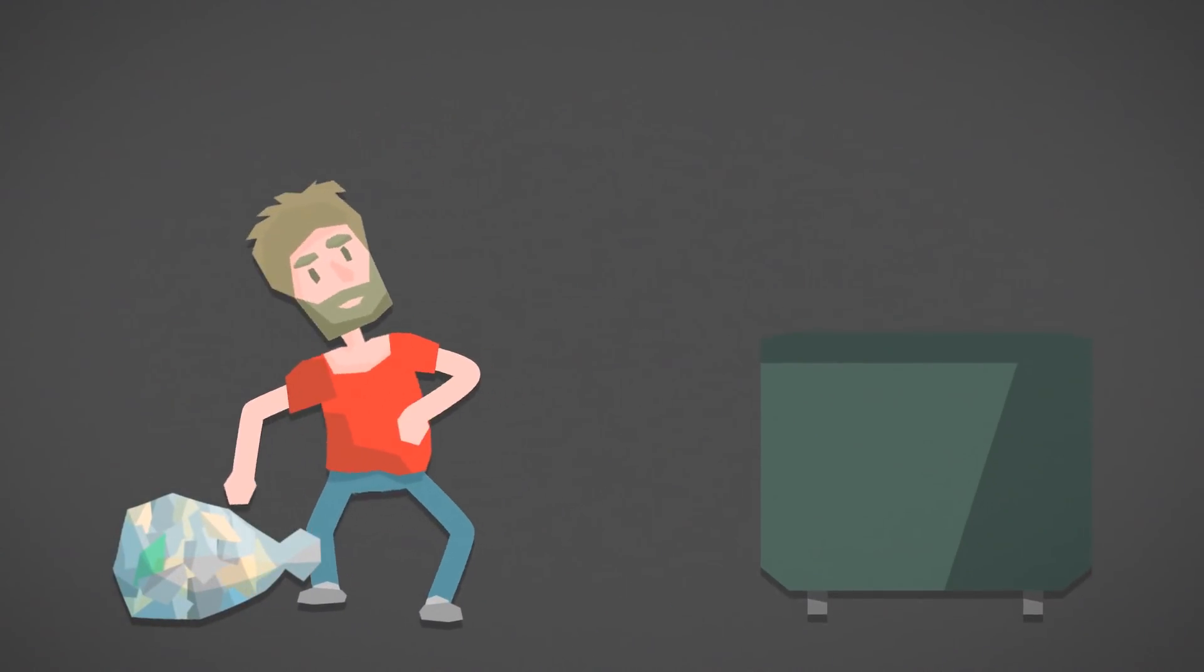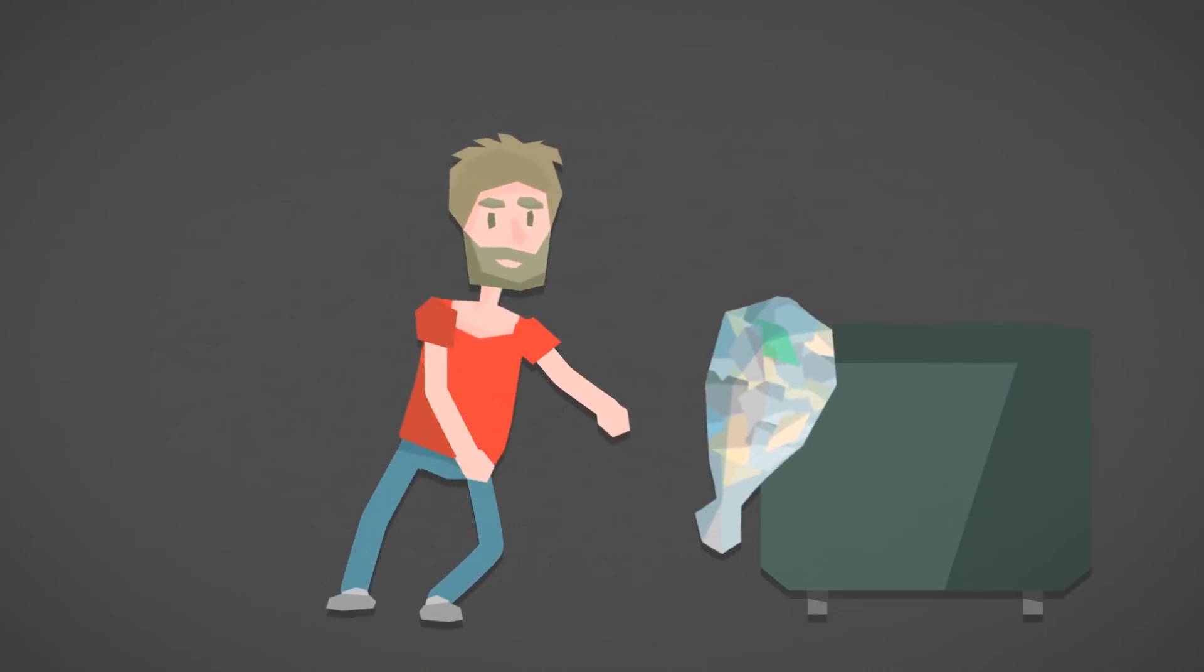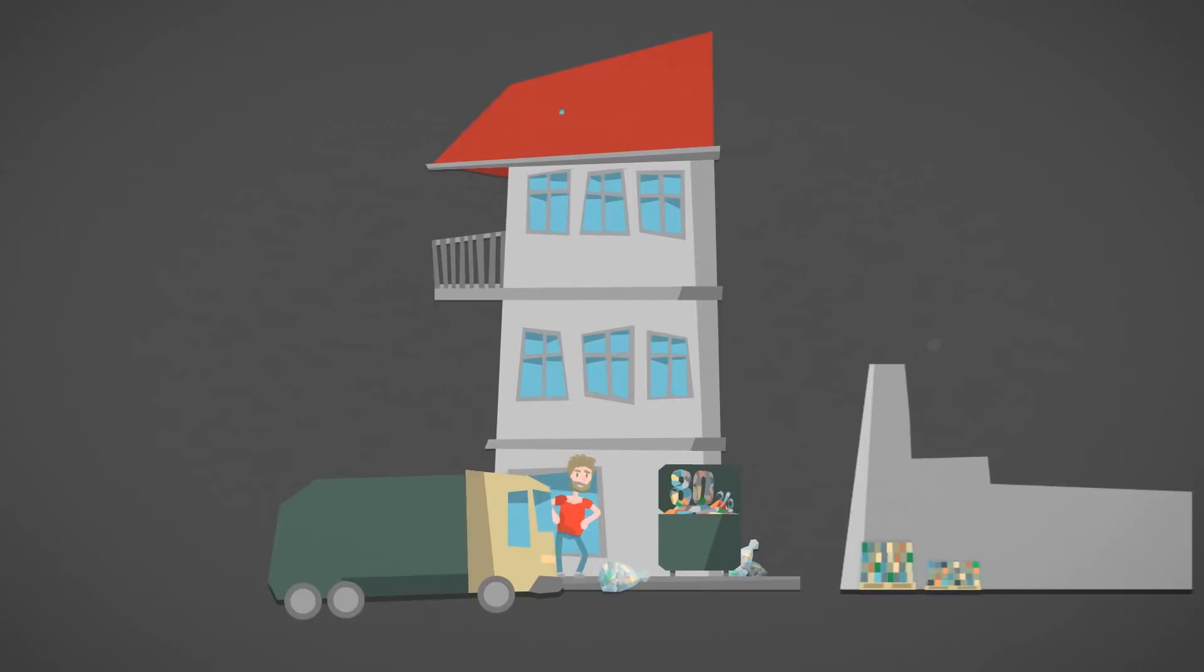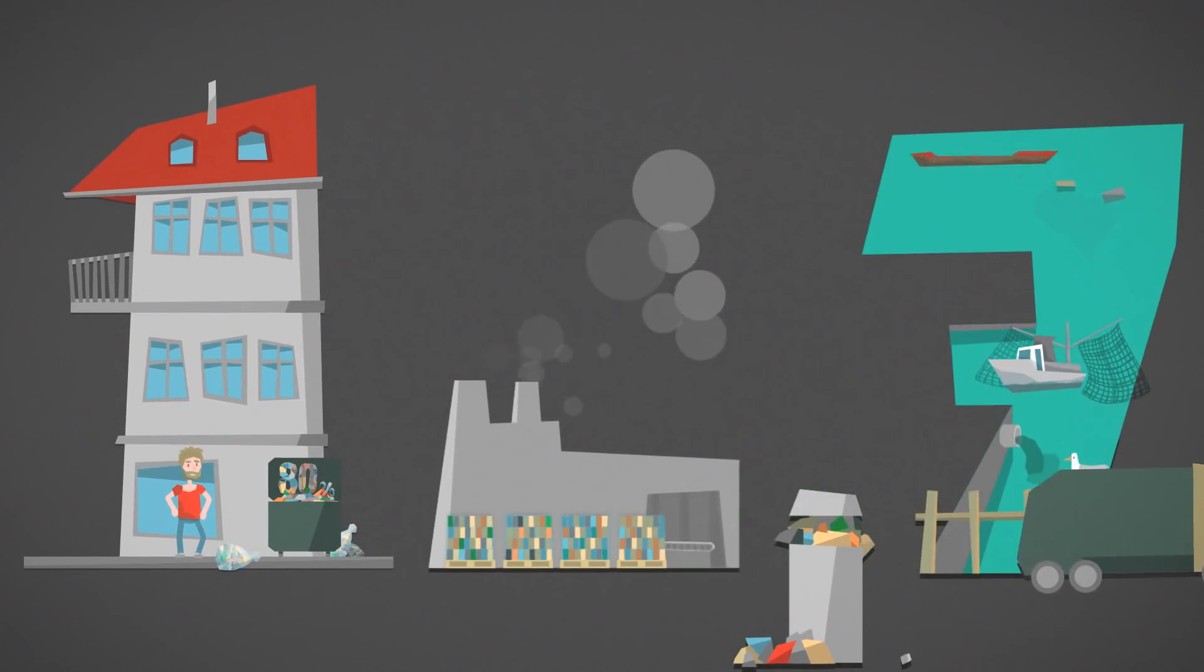Plastics don't biodegrade. They just become smaller pieces of plastic and pollute the environment for centuries. Incredibly, 80% of the plastic in the ocean actually comes from land, the rest from shipping and discarded fishing nets.